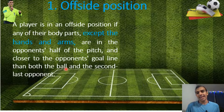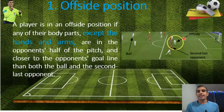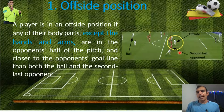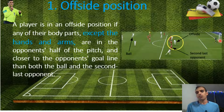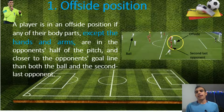In this image you can see the offside, and this player is the second-last opponent. When we say second-last opponent, it means the goalkeeper is the first opponent. But sometimes you can ignore the goalkeeper and just say 'last opponent' — both are correct.